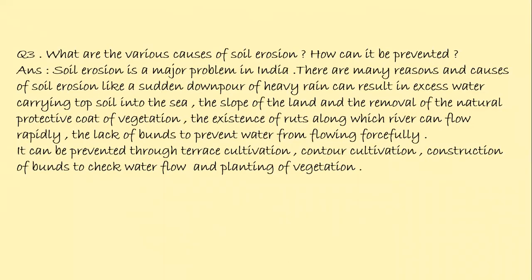Next question: What are the various causes of soil erosion? How can it be prevented? Answer: Soil erosion is a major problem in India. Causes include a sudden downpour of heavy rain resulting in excess water carrying topsoil into the sea, the slope of the land, removal of the natural protective coat of vegetation, the existence of ruts along which water can flow rapidly, and the lack of bunds to prevent water from flowing forcefully. It can be prevented through terrace cultivation, contour cultivation, construction of bunds to check water flow, and planting of vegetation.